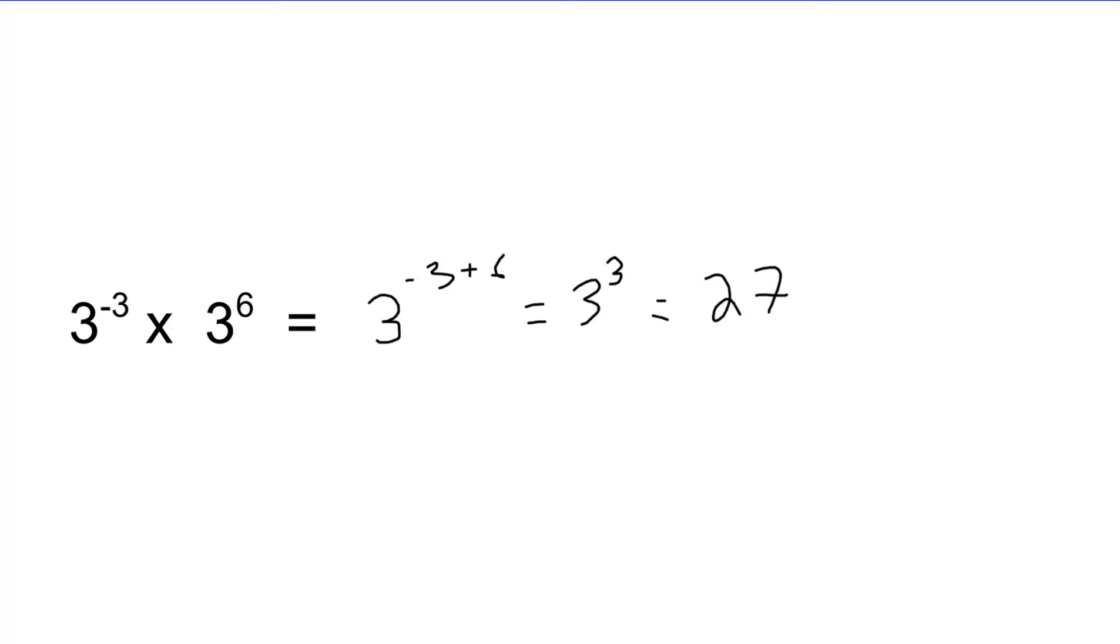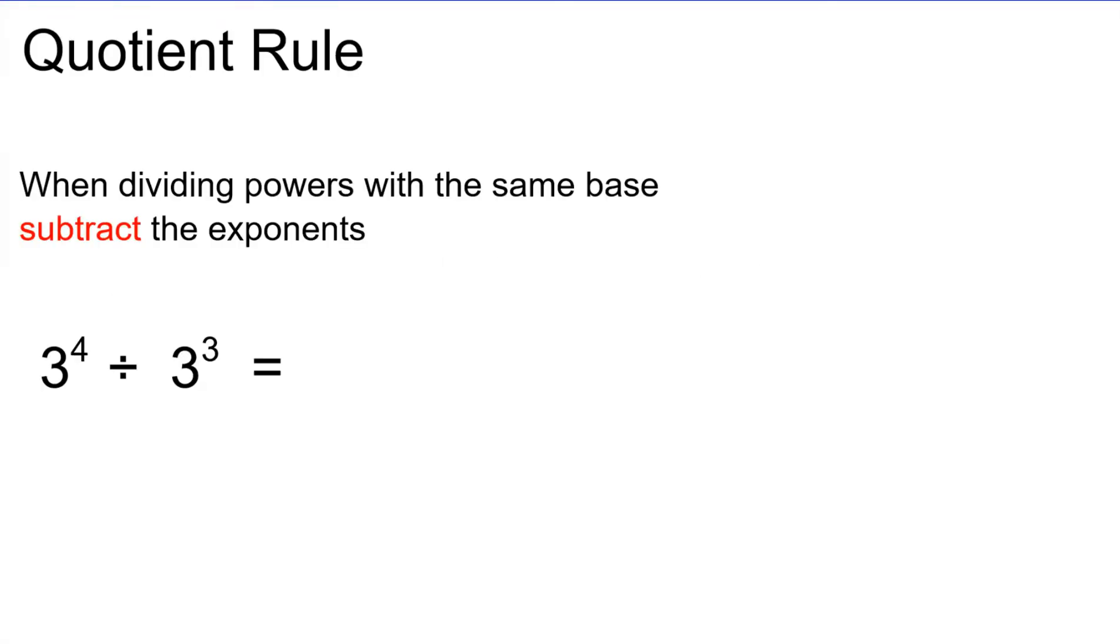Next up, we're going to look at the quotient rule. So the quotient rule is sort of the opposite of the product rule. When we're dividing powers with the same base, we're going to subtract the exponents.